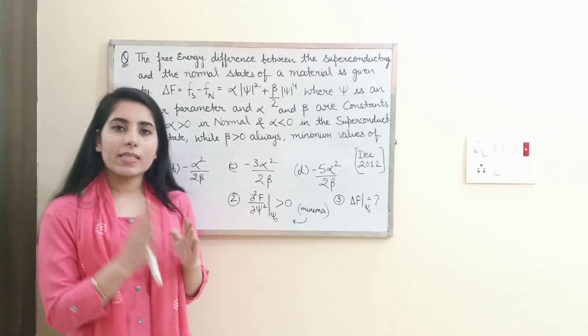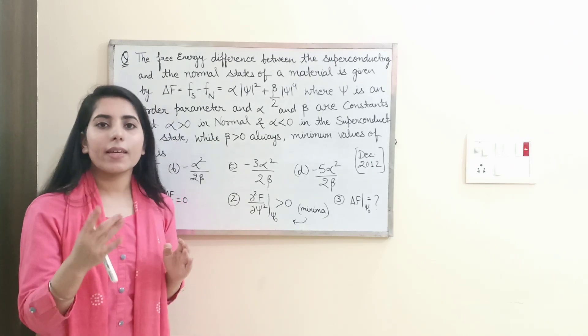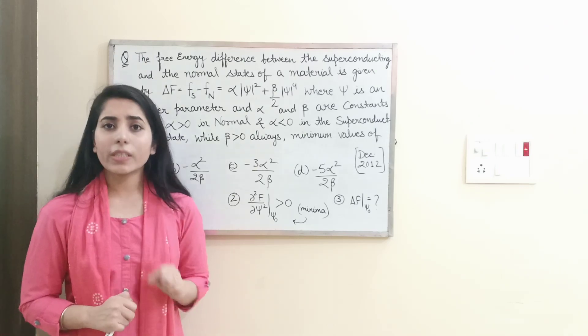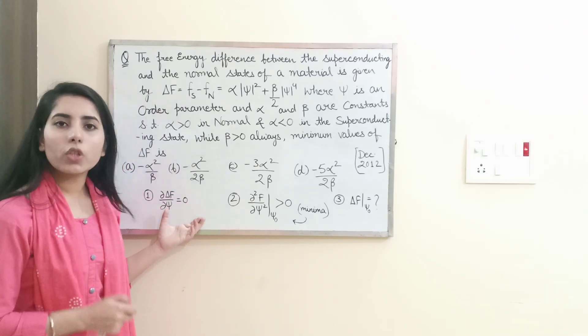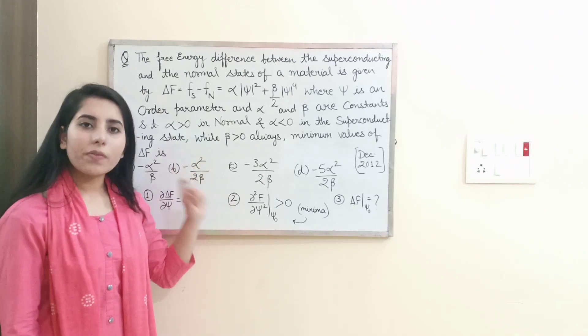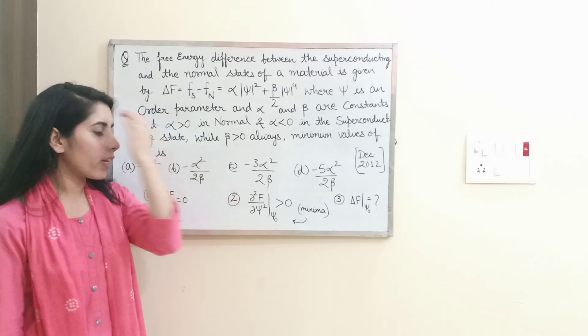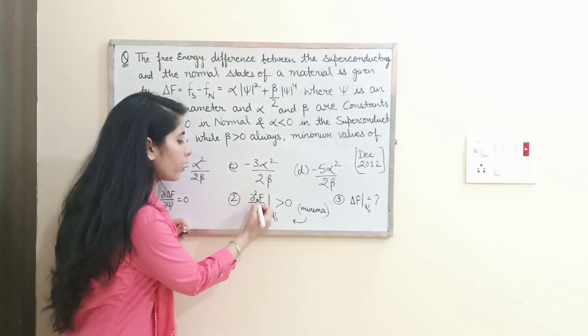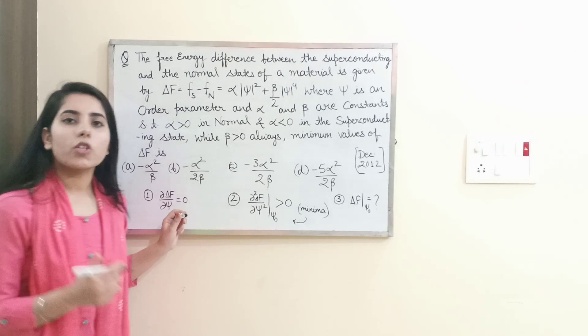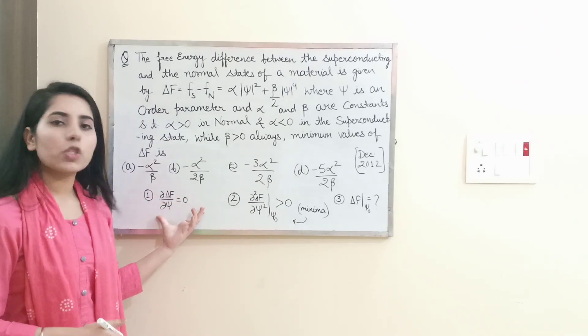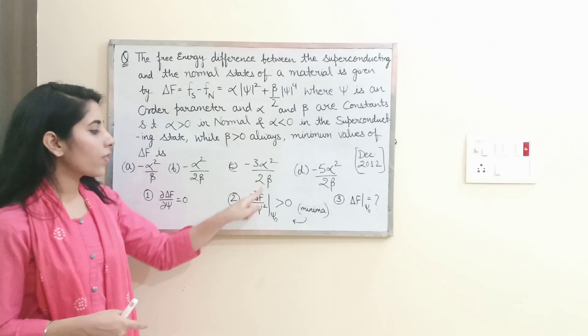Otherwise, the exact step says find sign. After finding the values of sign, you need to check - you may get two values of sign from here. You need to check at what value of sign the second order derivative of delta f, for what value of sign which you have got from here, is greater than zero, because greater than zero condition tells us the minimum.